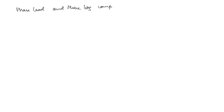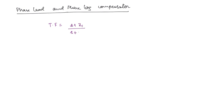Let us now start with the phase lead and phase lag compensators. We use the word 'compensators' here, whereas for PID we use the word 'controllers.' There is a slight difference, but at this stage you can consider both similar. Whether it is a lead or a lag compensator, the transfer function is going to have one zero and one pole. Depending on whether the zero or the pole is closer to the jω axis, we have the lead and lag compensator.